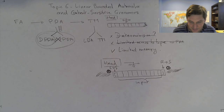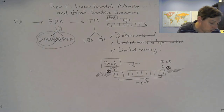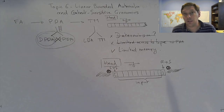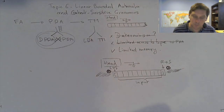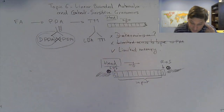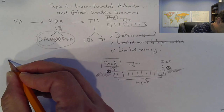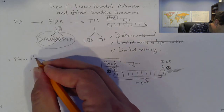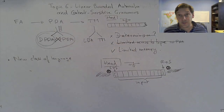That's what an LBA is. It works as a Turing machine apart from this boundary condition. Now, why is LBA interesting? The first thing to notice is that it defines a new class of language, which we call context-sensitive languages. Just this in itself is interesting.